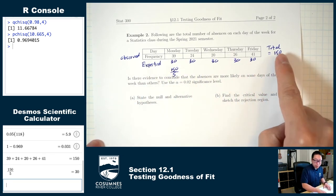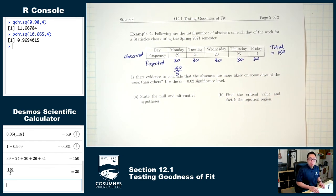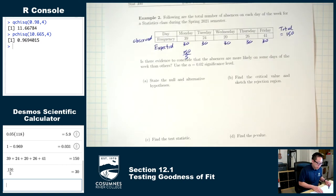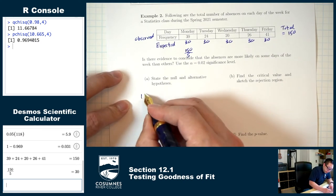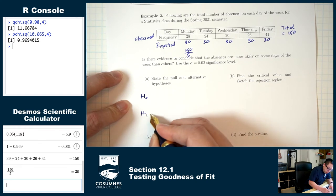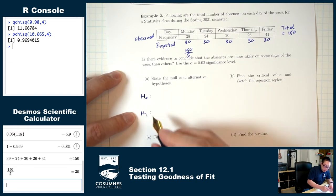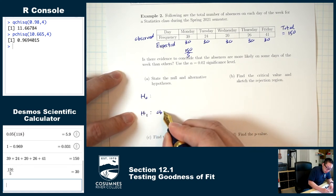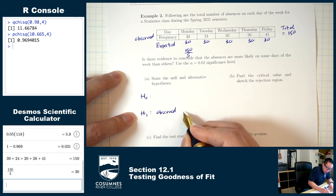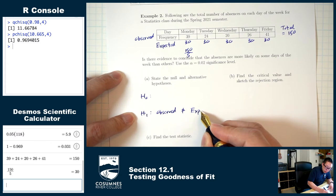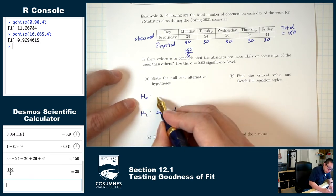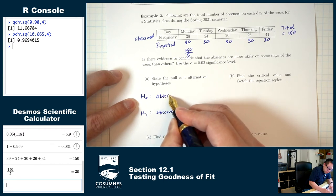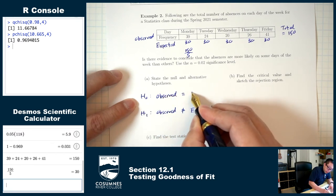Part A: state the null and alternative hypotheses. H1 is observed not equals expected — it's always not-equals for a goodness-of-fit test. H0 is observed equals expected.